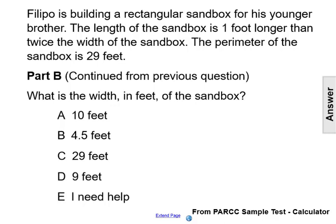Filippo is building a rectangular sandbox for his younger brother. The length of the sandbox is one foot longer than twice the width of the sandbox. The perimeter of the sandbox is 29 feet.